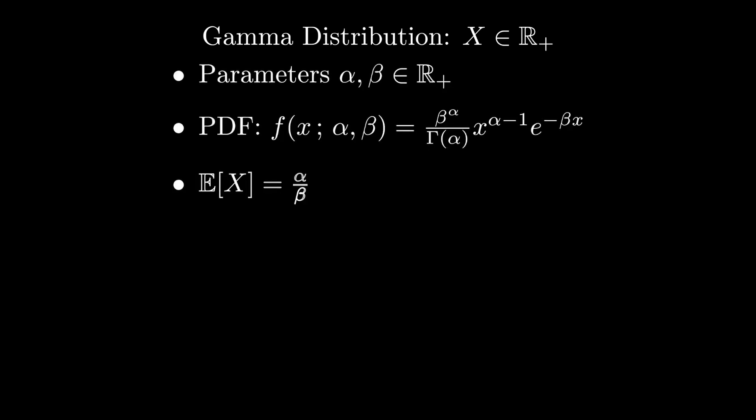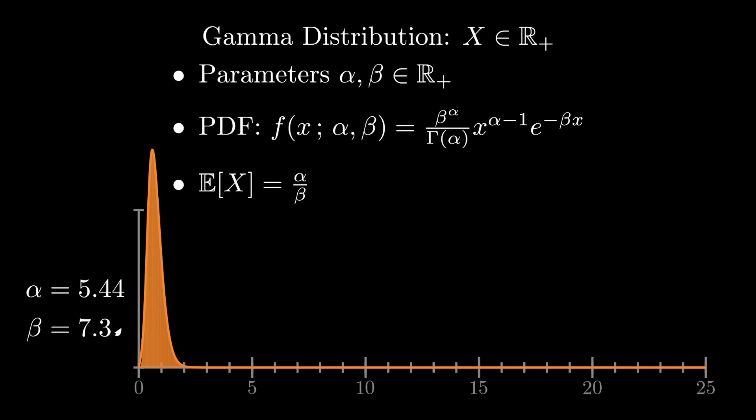The gamma distribution is a bit more flexible, but also defined on the positive reals. It's called the gamma distribution because the gamma function appears in its normalization constant. If you haven't heard of the gamma function before, you should think of it as just the continuous generalization of the factorial. There are a couple of different parameterizations of the gamma distribution. Here I'm showing you the popular alpha and beta parameterization.